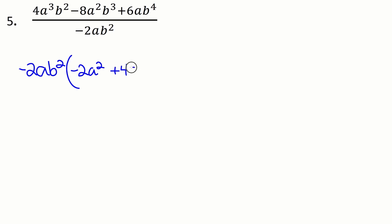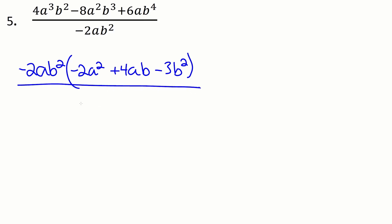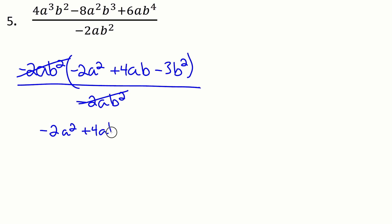So then a squared — dividing by a leaves me with one a. b cubed, taking out b squared, leaves me with b. Then plus six divided by minus two leaves me with minus three. Then a — take out an a, so that's gone. b to the four divided by b squared leaves me with b squared. So that's common factored in the top, and now I'm dividing by minus two a b squared. This term exactly matches, so I can cross off that whole thing, and I'm just left with minus two a squared plus four ab minus three b squared.